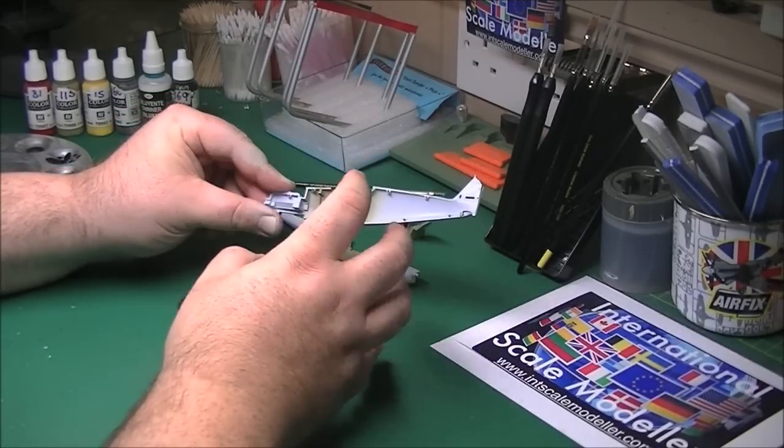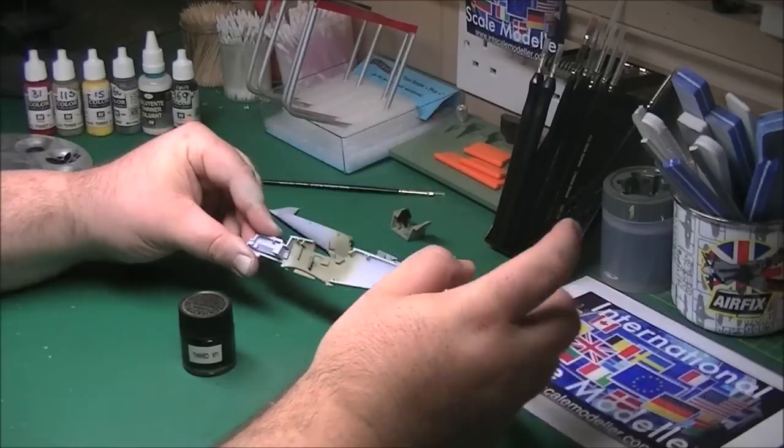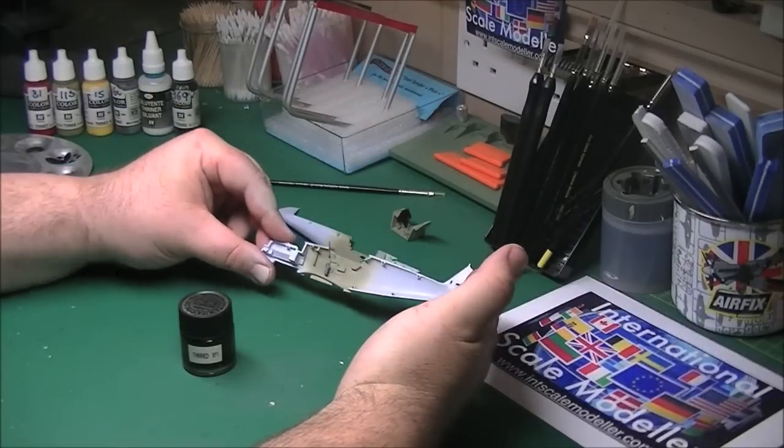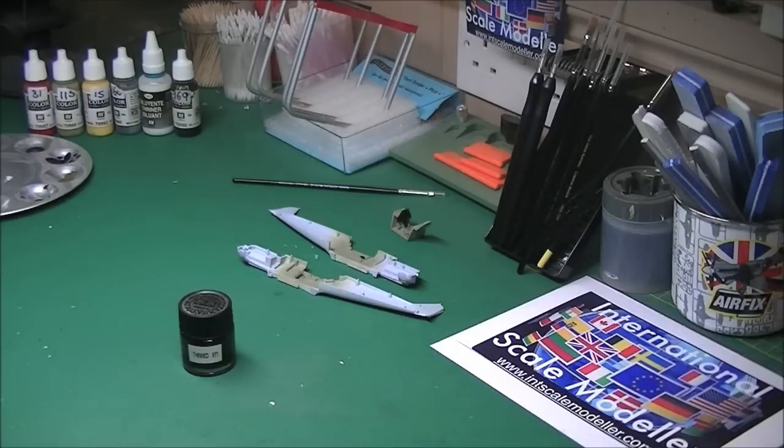Once we've done that and that's dried, we'll come back. Give it a quick dry brush over with some Tamiya X-11. And that's basically the cockpit finish. That's how I do them. So I'll pop over the spray booth and I'll get this wash on.